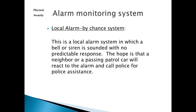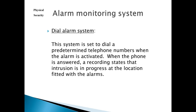A local alarm by chance system — the local alarm goes off, but if there's no one to hear it, it doesn't get reported and there is no response. Very popular in the 40s and 50s around banks; it only works in small towns where the bell wakes everybody up. The dual alarm system dials a predetermined phone number when the alarm is activated — when the phone is answered, a recording states an intrusion is in progress. This also has a high false alarm rate, but the good news is if it's going to your house and you're the security guy, you pick it up, call your local patrol force, and then call the police if it's a real alarm.